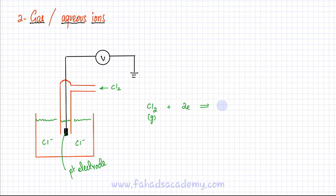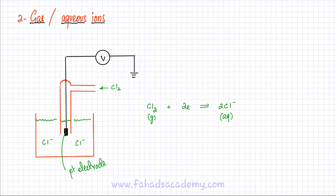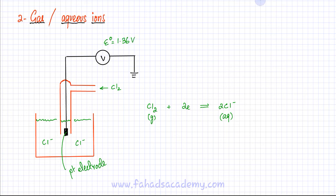One reaction is that Cl₂ gaseous molecules gain electrons and form aqueous Cl⁻ ions. The reverse can also occur: Cl⁻ ions lose electrons and are converted back into Cl₂. A reversible equilibrium is established between these two reactions. We can connect the platinum electrode to a voltmeter with a ground, and measure its E-nought. Looking in the data booklet, the E-nought for this cell is +1.36 volts — a very high electrode potential, meaning chlorine has a very high tendency to gain electrons. This is the second type of electrode: a gas and its aqueous ions.